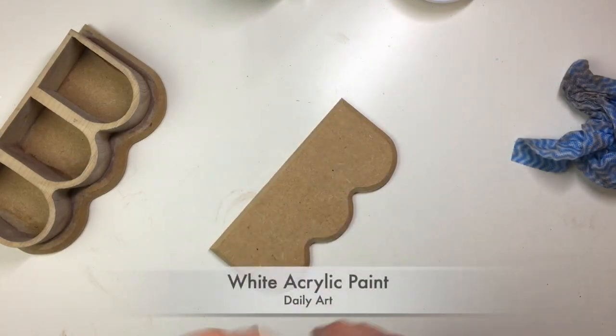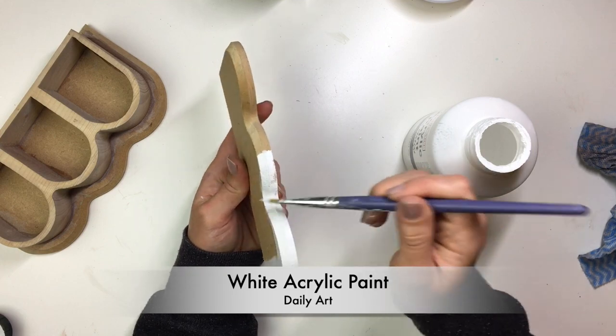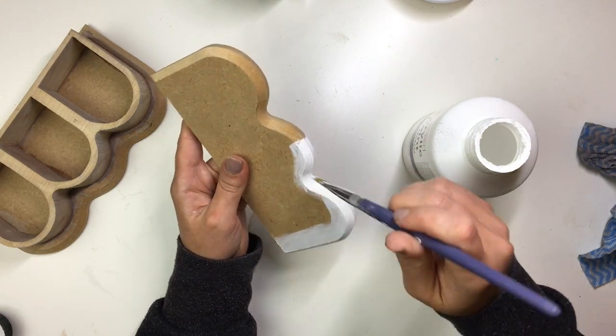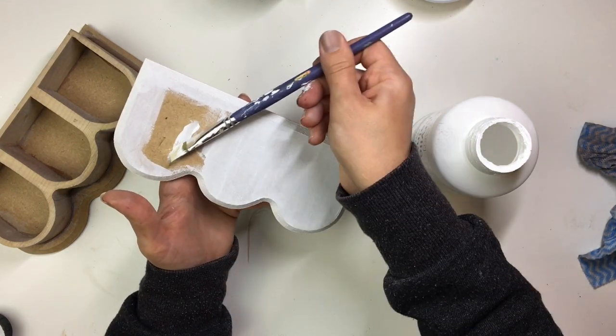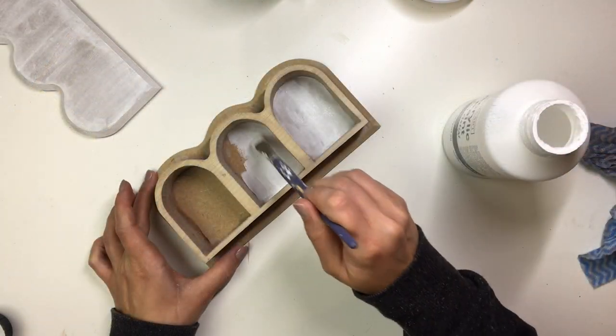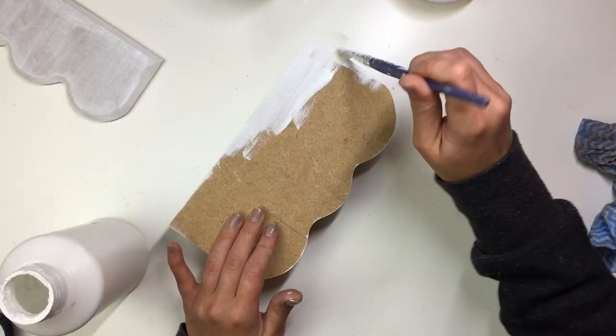I applied a coat of white acrylic paint over the MDF parts to serve as a primer and also of course for our decoupage parts, we always want the surface to be a light color to make sure that the colors show up properly.